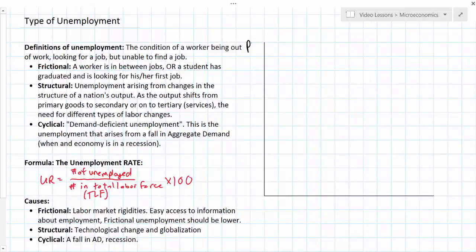Let's do some graphical analysis now. We'll put our labels on our ADAS diagram over here including the price level and the real GDP.